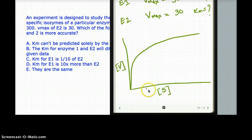So from this graph, how can you find Km? What you do is this is the slope, and you take half of the slope.